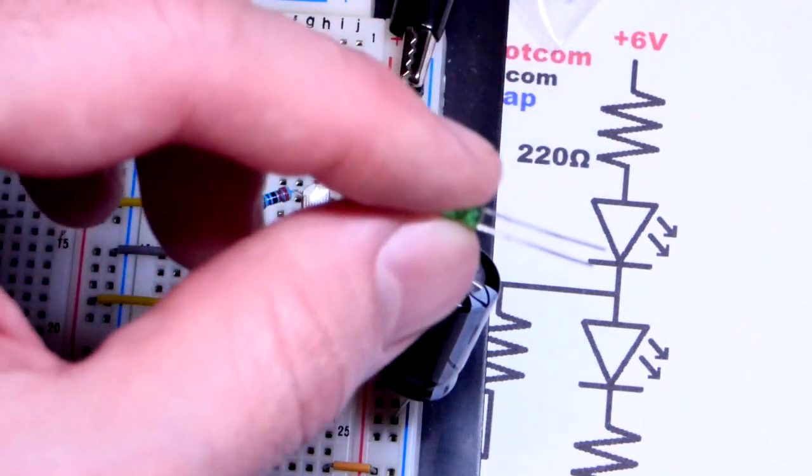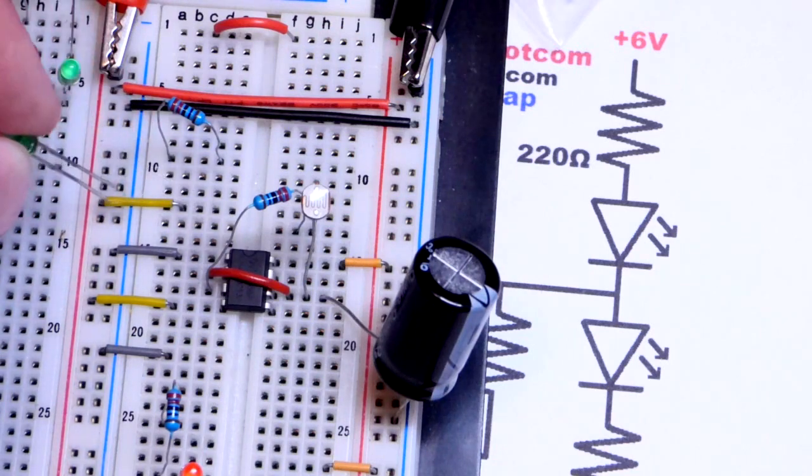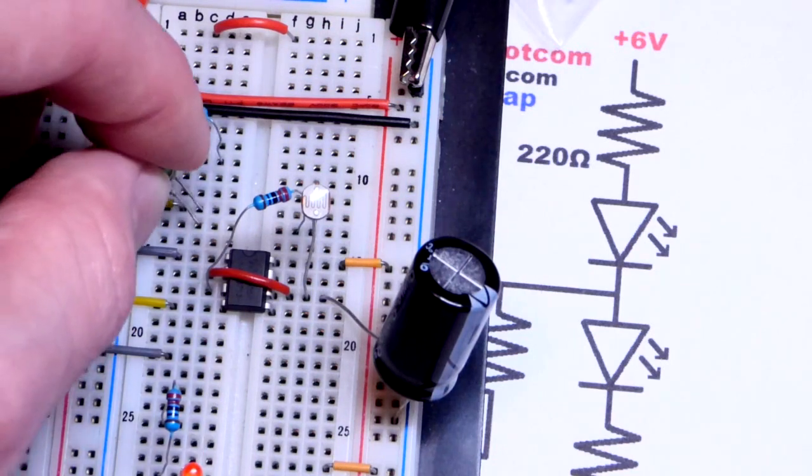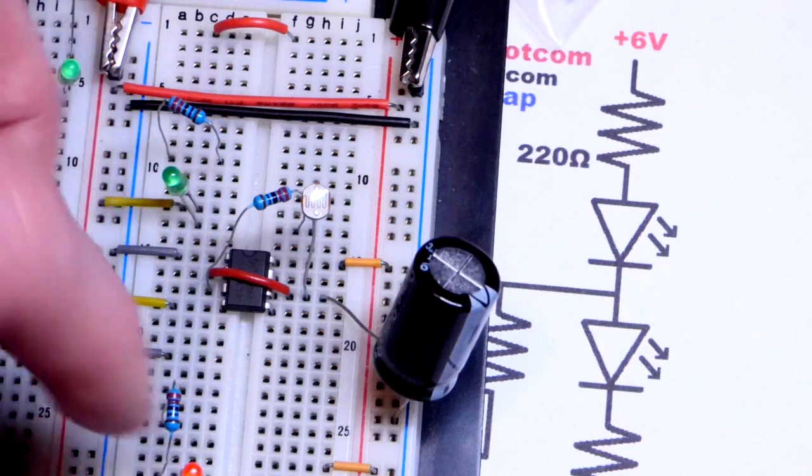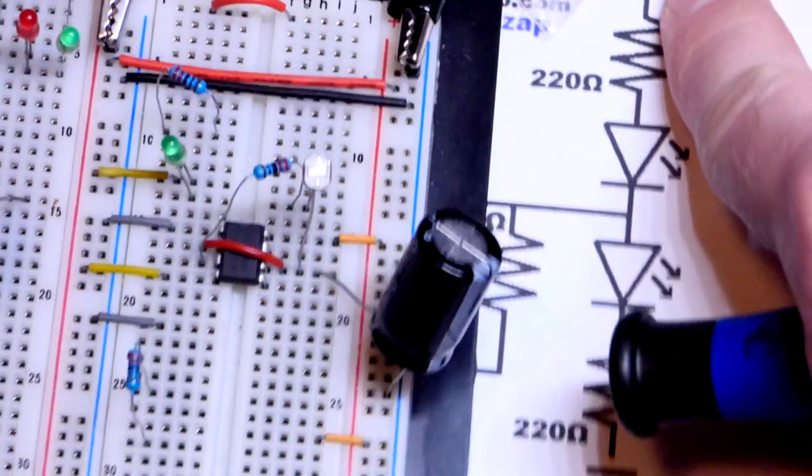The long lead, the anode, has to head towards the positive supply. Short lead, the cathode, towards the output. So I'm putting the long lead, the anode, right there. And then with the other LED, I'm going to put it where I have the resistor in this schematic.